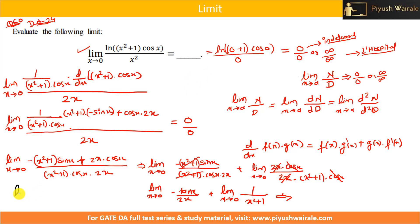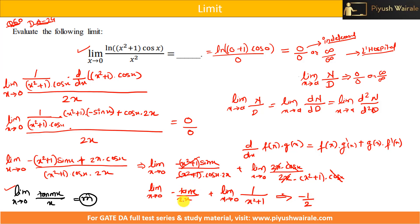We have an important trigonometric property: limit x→0 of tan(mx)/x = m. With m = 1, limit x→0 of tan(x)/x = 1. Applying this: the first term gives −(1/2)·1 = −1/2. For the second term, putting x = 0 gives 1/(0 + 1) = 1. So the total is −1/2 + 1 = 0.5.